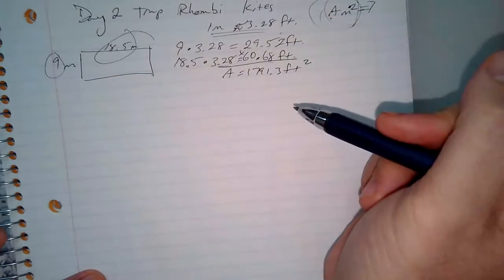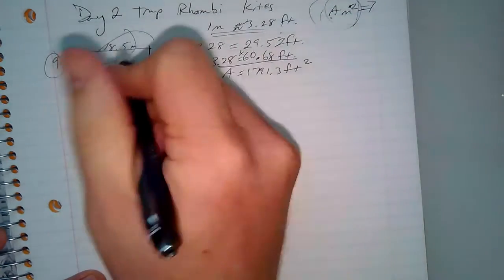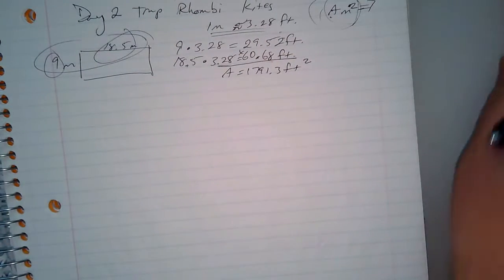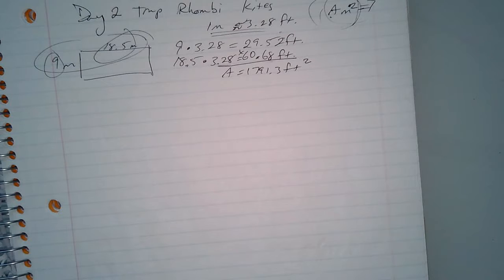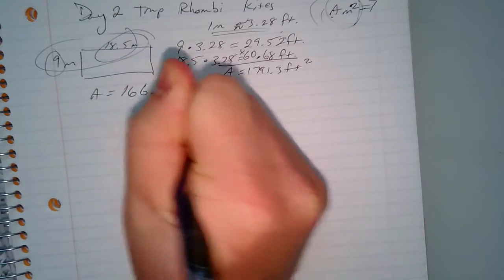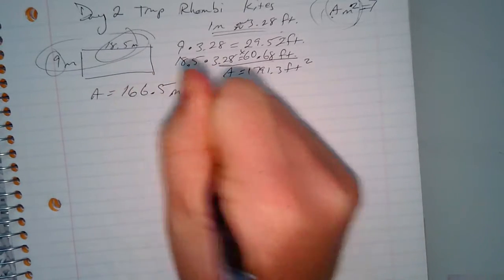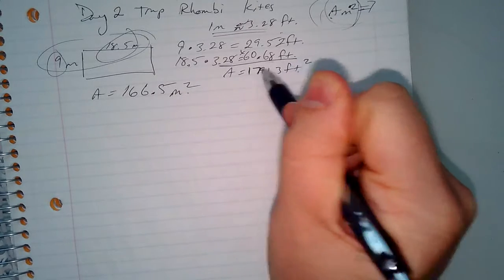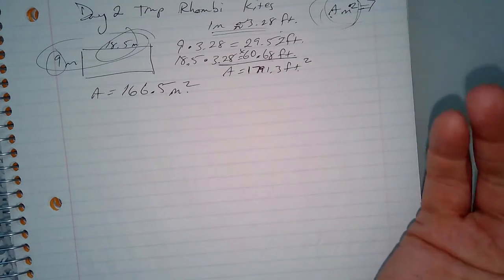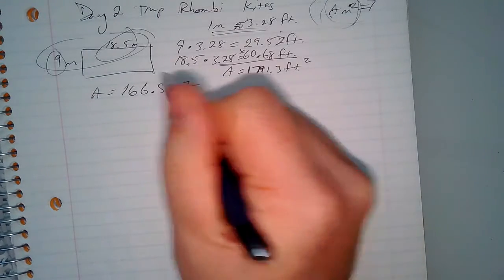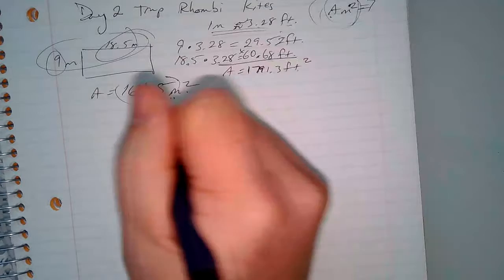What would it have been the other way? If I found the area first: 9 times 18.5 gives me 166.5 meters squared. If I want to change meters squared to feet squared, this is probably the most important portion of this entire lesson — I have to change it twice. So I'm taking 166.5 times 3.28 to get to feet.